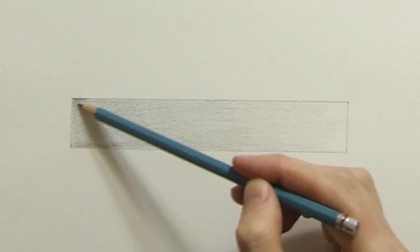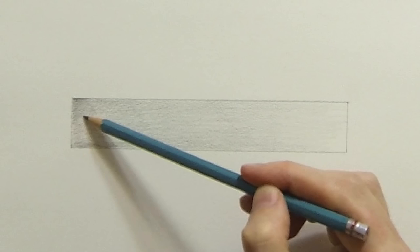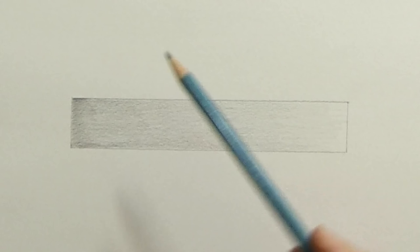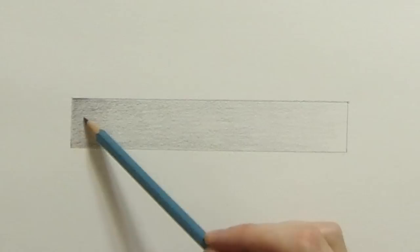But I can still use this same pencil. Now if I shade in a different direction, it's going to create a darker value. So now I'm doing kind of diagonal strokes. Basically it's like cross hatching, just without any spaces.